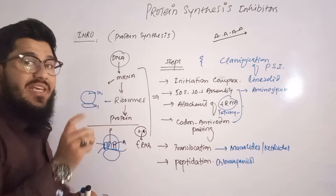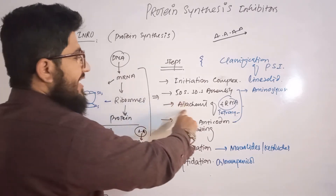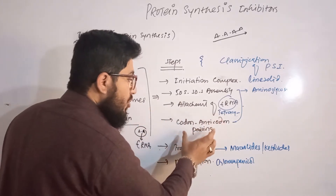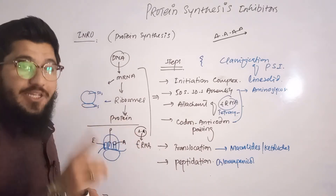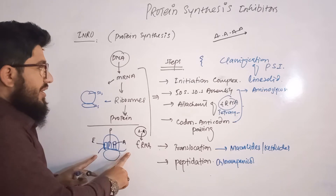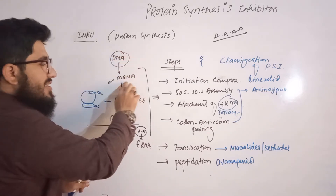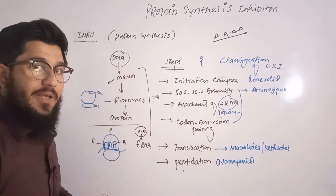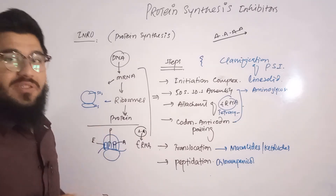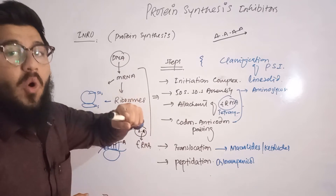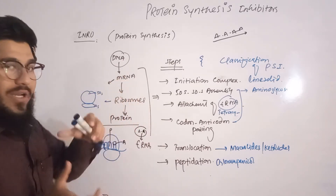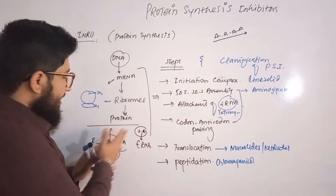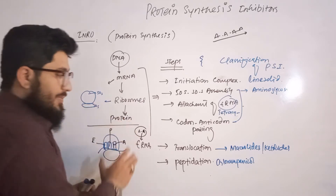The tRNA attaches at the A region. After that, codon-anticodon pairing takes place. The tRNA carries the anticodon for the codons present on the messenger RNA. The DNA gives a message to the messenger RNA in the form of codons; these codons are read by the transfer RNA in the ribosome, and then the protein is synthesized. So codon-anticodon pairing takes place at this stage.